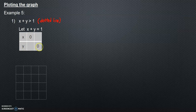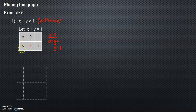We set up a table with x and y. When x is equal to zero, we substitute into our equation: zero plus y equals one, so y equals one. When y is equal to zero, we substitute: x plus zero equals one, so x equals one. So our two points are (0, 1) and (1, 0).